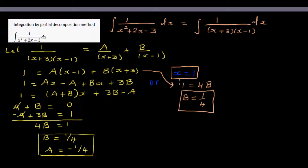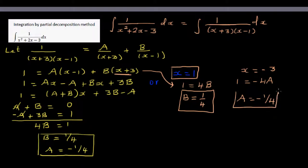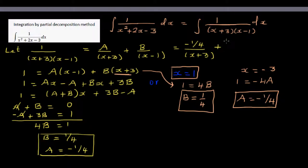To cancel B, let x equal negative 3. When x equals negative 3, the B term cancels and we get 1 equals negative 4A, so A equals negative 1/4. So A is negative 1/4 and B is positive 1/4. We can now write the decomposition as negative 1/4 over x plus 3 plus 1/4 over x minus 1.